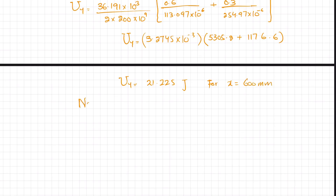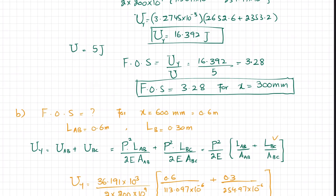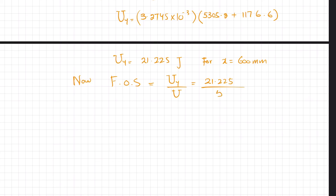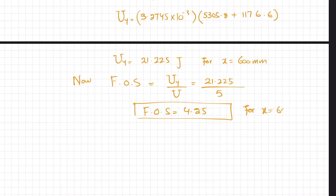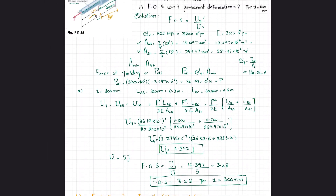Factor of safety equals U_y / U = 21.225 / 5 = 4.25. So the factor of safety with respect to permanent deformation for x equal to 600 millimeters is 4.25. That concludes problem 11.15.